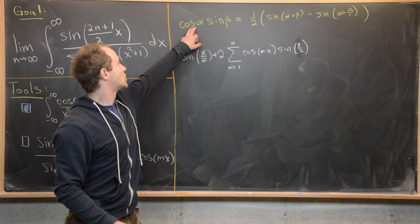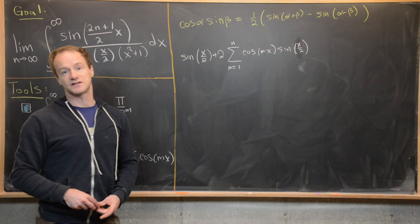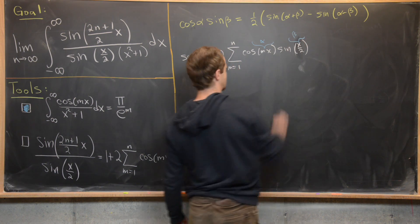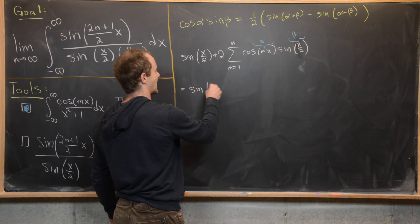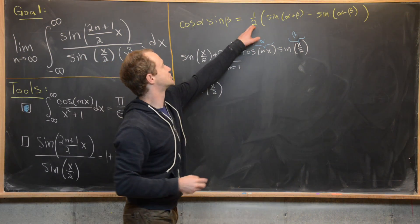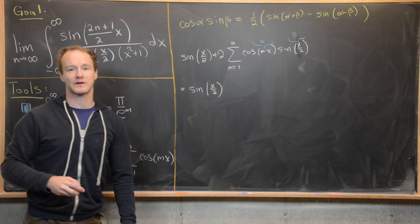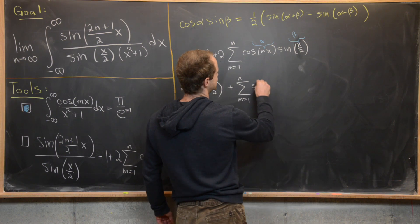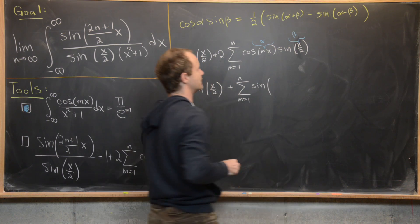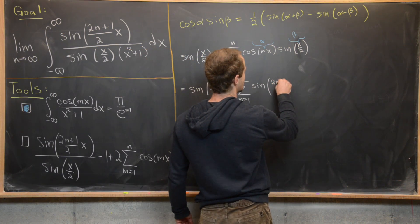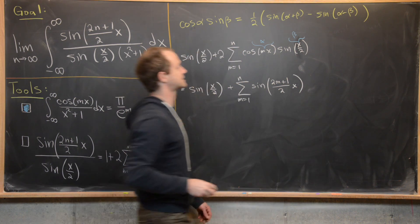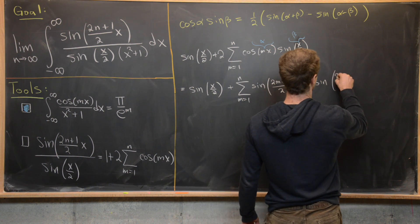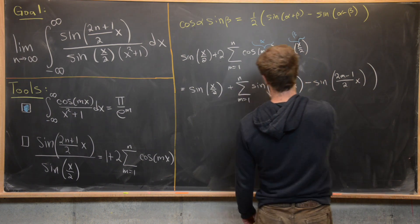Now apply the cosine(α)·sine(β) identity into the sum, setting α = mx and β = x/2. The factor of 2 cancels with the 1/2, giving sine(x/2) plus the sum from m=1 to n of sine((2m+1)/2 · x) minus sine((2m−1)/2 · x).